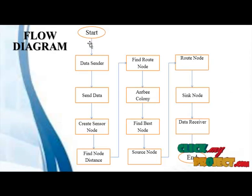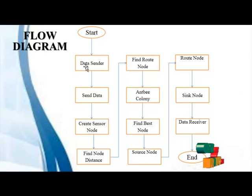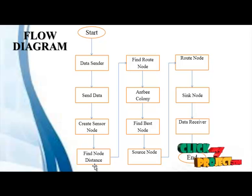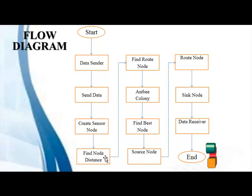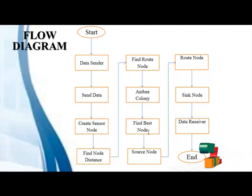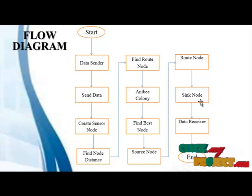This is the flow diagram. We start with the data sender, select the data, and send it to the users. Then we create a sensor node, find the distance, find the root node using the RTP colony algorithm, find the best node, then source node, root node, and sync node — and finally data is received by the receiver.